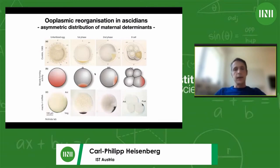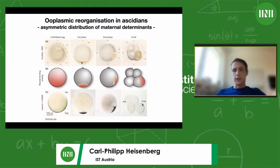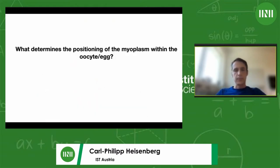Work in the Nishida lab over the last 10–20 years has shown that this structure — the myoplasm — actually contains RNAs. These maternal RNAs are segregated into different blastomeres and then determine the fate of these blastomeres. Essentially, knowing about the distribution of these maternal RNAs tells you something about the lineage of these cells and the future embryonic development.